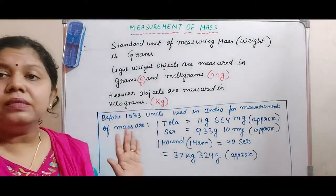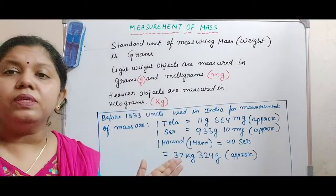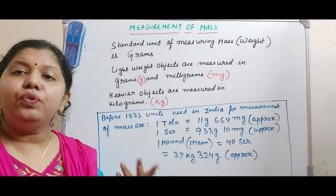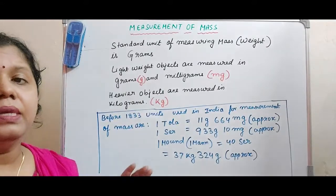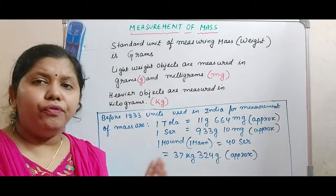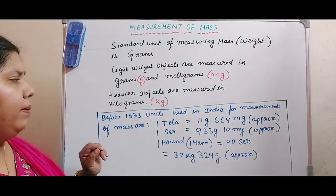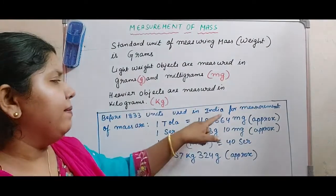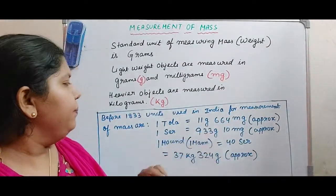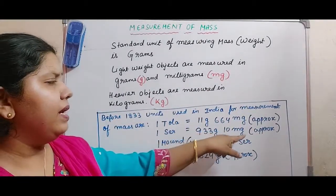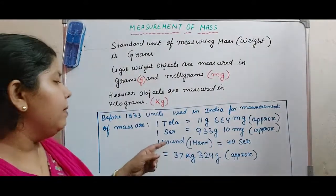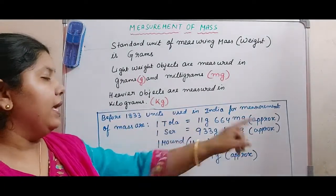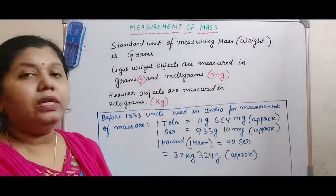Before 1833, in earlier times in India, there were different units of measurement. Even today some local people use these. One tola, generally used with gold items, is equal to 11 grams 664 milligrams approximately. One seer is 933 grams 10 milligrams approximately. Next is one maund — in some areas also called man — which equals 40 seers, that is 37 kg 324 grams approximately.